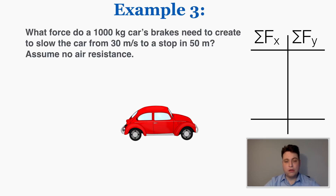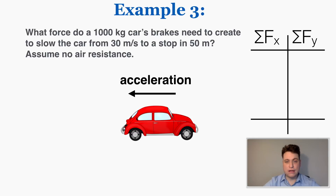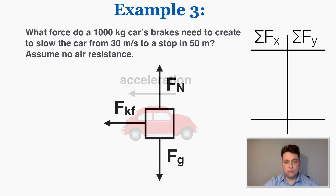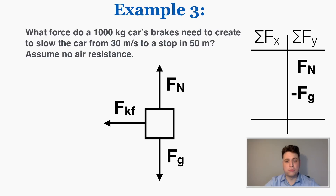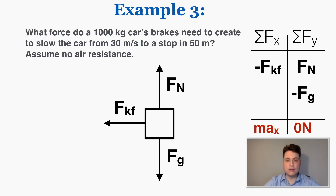If the car is slowing to a stop, the acceleration points in the opposite direction of the velocity because it's taking away from the velocity. The forces on the car are a normal force up, gravity down, and kinetic friction pointing to the left from the brakes. I plug these into my force table, noting the car is not accelerating vertically but is negatively accelerating in the x direction, so negative f_kf equals m times ax.